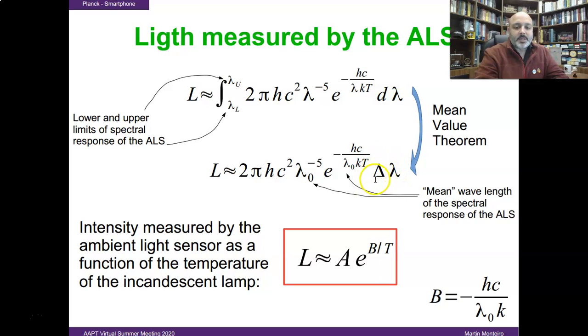and delta lambda is the difference between the upper and lower limits of the spectral response of the sensor. So, the light intensity could be expressed as a function of the temperature of the object, where A and B are constants that depend on universal constants, like Planck's constant, the speed of light, Boltzmann's constant, and the mean wavelength of the sensor.